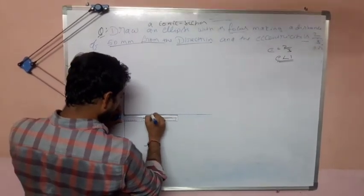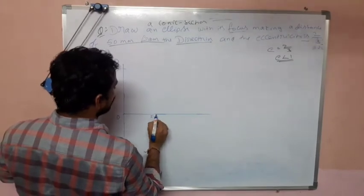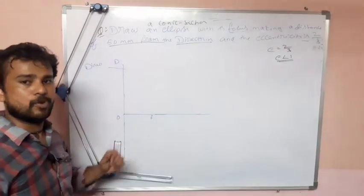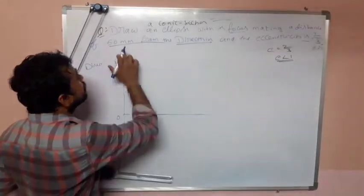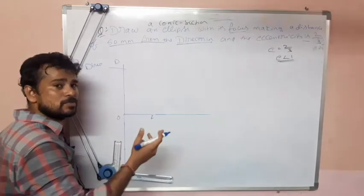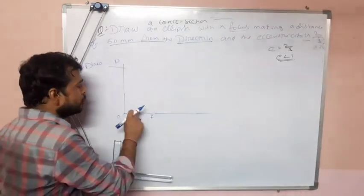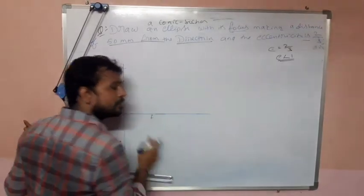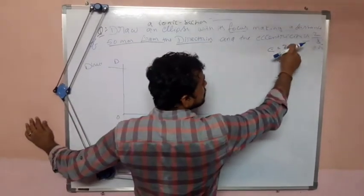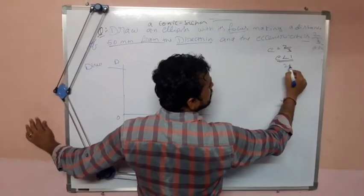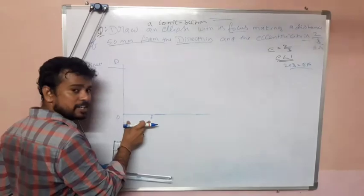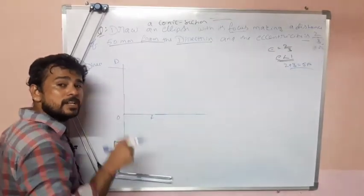Let's indicate the focus F. Now, eccentricity is 2 by 3. To draw the vertex, E equals 2 by 3 means 2 plus 3 equals 5 parts. So divide the O to F distance into 5 parts using the line division method.